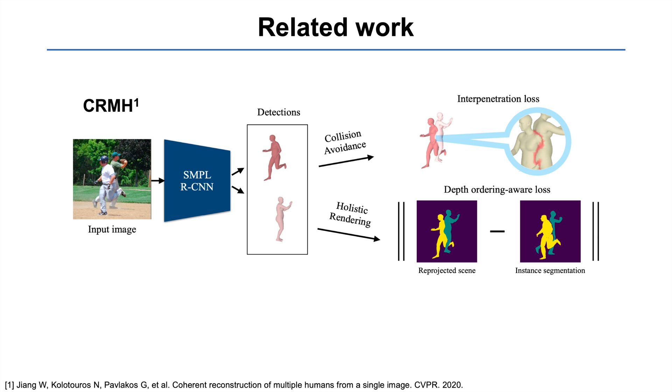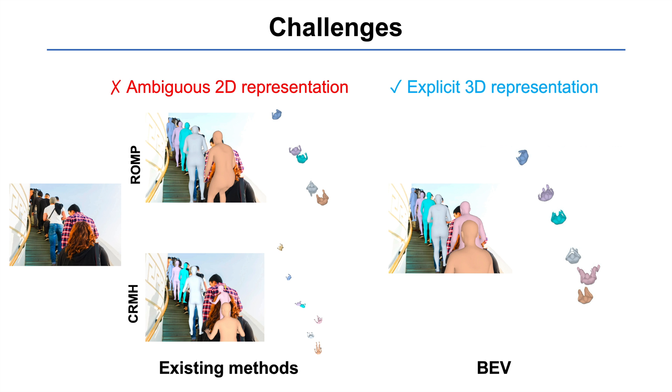CRMH is a multi-stage method that learns depth reasoning. CRMH introduces two loss functions to avoid collision and to learn depth ordering for overlapping people. However, CRMH has difficulty learning depth relations from natural cases without overlapping people.